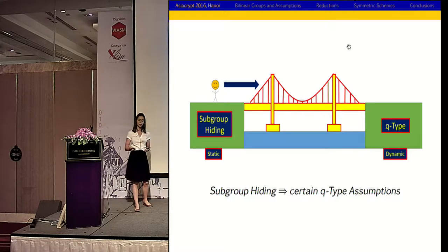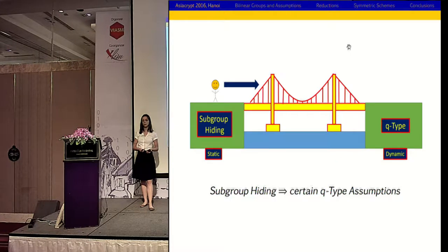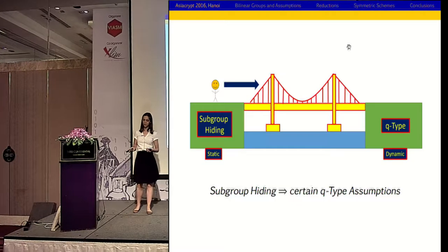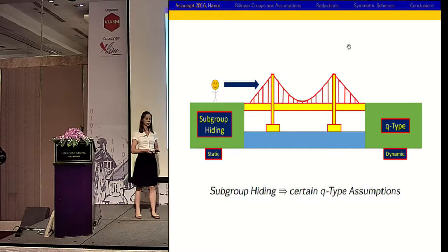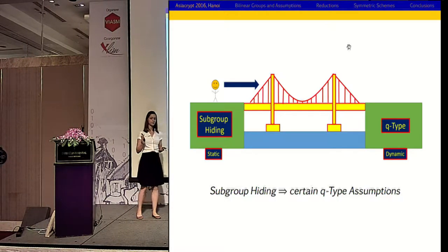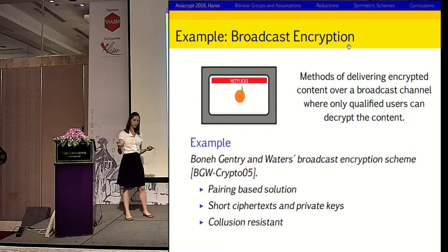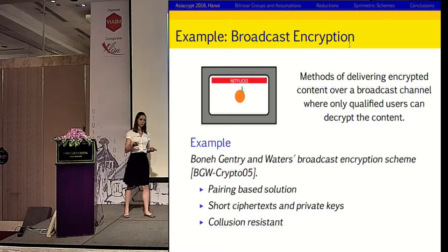In our work, we look at showing that certain types of Q-type assumptions are implied by subgroup hiding. Our Q-type assumptions are dynamic assumptions in that their security depends not only on the security parameter, but also on some value Q, which is typically related to the number of oracle queries. Subgroup hiding, on the other hand, is a static assumption, so security depends solely on the security parameter. Therefore, the fact that these two things are related is quite a nice result.